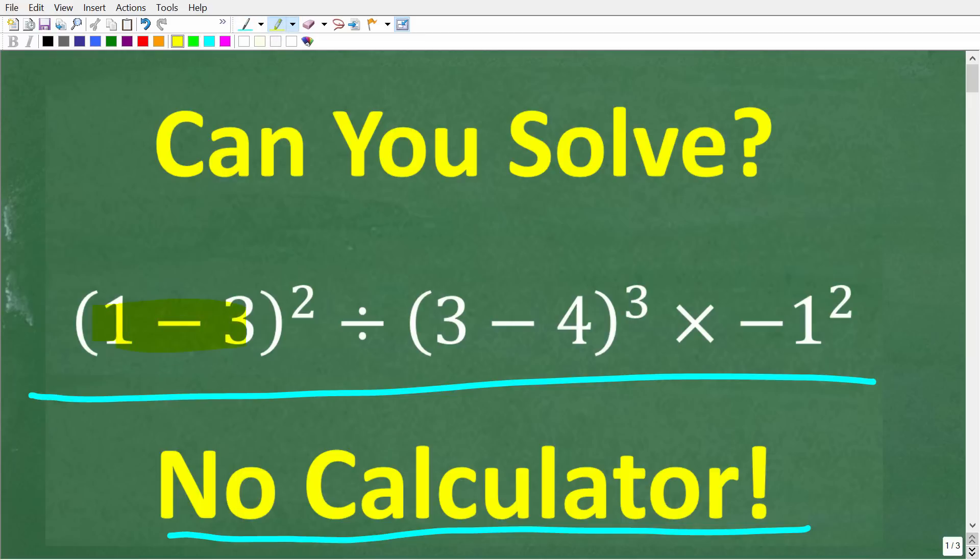So we have 1 minus 3 in parentheses squared divided by 3 minus 4 in parentheses cubed times negative 1 squared. Once again, no calculators, but if you think you know the answer, put that into the comment section.